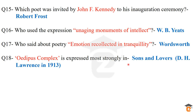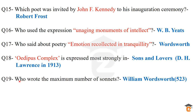Question number 18: the Oedipus complex is expressed most strongly in which work? The answer is Sons and Lovers, the novel by D.H. Lawrence, written in 1913. The Oedipus complex is a term describing a son's very close relationship with his mother. Question number 19: who wrote the maximum number of sonnets? The answer is William Wordsworth — he had written a total of 523 sonnets.